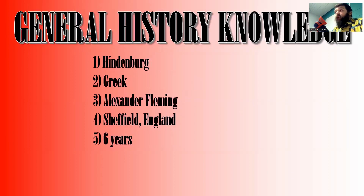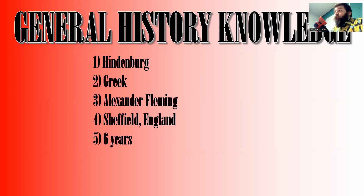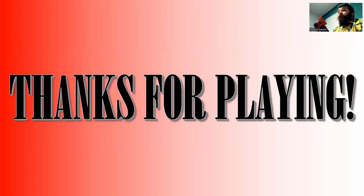General History Knowledge answers: number one — the rigid airship destroyed by fire in 1937 was the Hindenburg. Number two — Socrates was Greek. Number three — penicillin was discovered by Alexander Fleming. Number four — stainless steel was invented in Sheffield, England by Harry Brearley in 1913. Number five — the Second World War lasted six years. I hope you all had a good time playing — thanks for playing along and I'll see you all in February.